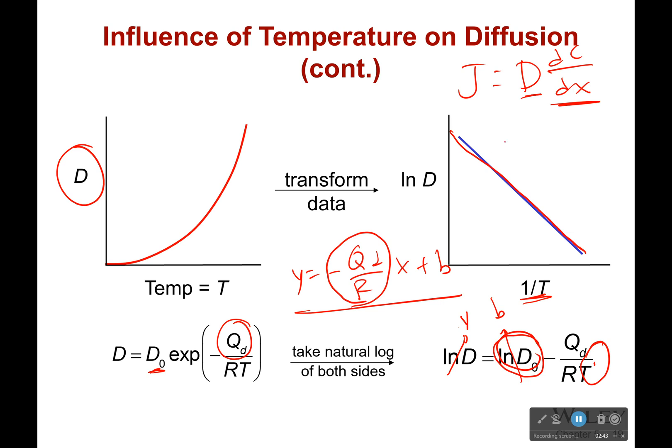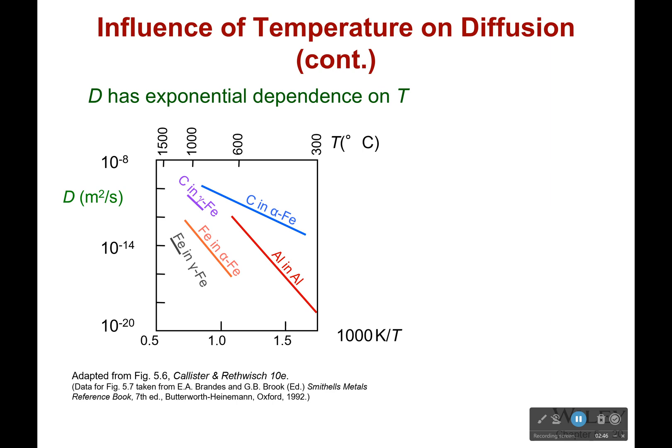Now as we know it's going to be temperature dependent. It also is going to depend on what two things are being combined here. Like is it carbon and iron, or what kind of iron is it? Iron and iron? Is it aluminum aluminum? Is it iron in different types of iron? There's all kinds of different combinations here, and depending on what combination it is, it's going to depend on how it is affected by temperature.